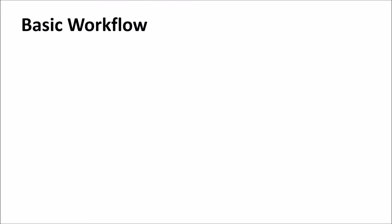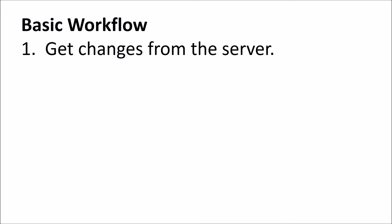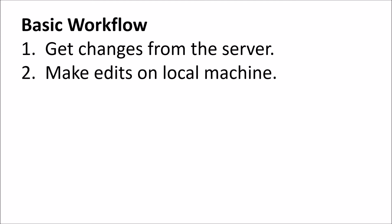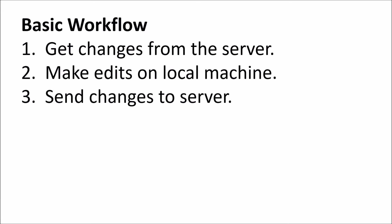The workflow in Git is actually fairly similar to other version control systems. In a basic workflow there are probably just three main steps. The first is you would like to get or download changes from the server and put those on your local machine, so that once they're on your local machine you can start making edits to the latest version of these files, and then when you're done making edits you just want to send those changes back up to the server so the rest of your team has access to them.